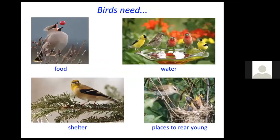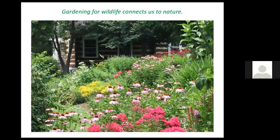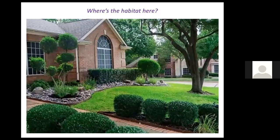To review, birds need four things as do all animals: food, water, shelter, and places to rear their young. We can offer at least food, shelter, and places to rear young simply through the plants we establish in our landscape. Gardening for wildlife connects us to nature. Unfortunately, too often there's an expectation that property must look manicured to appear well cared for and attractive, and that leaves nature out of the picture unless the tree is a native tree offering habitat.